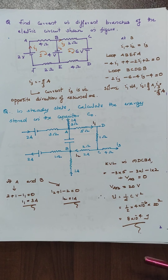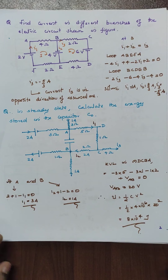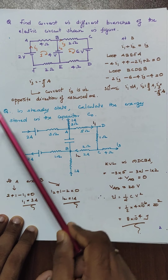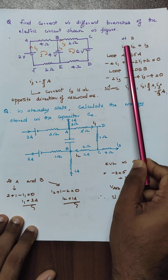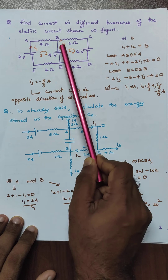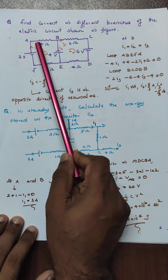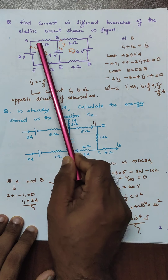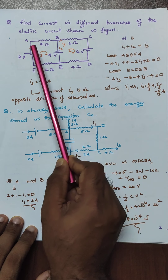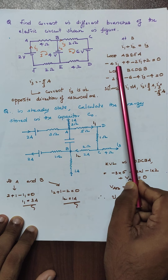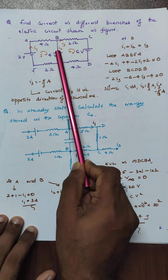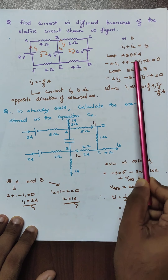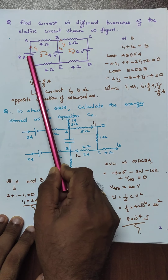You should try more multiple choice questions based on Kirchhoff's law. Find the current in different branches of the electrical circuit. At point B, we apply the junction rule as I1 plus I2 equal to I3. Then apply the loop rule for A, B, E, F into A. We are traversing like this: minus 4 into I1, plus negative to positive as plus 4, then minus 2 into I1, then plus 2 equal to 0.